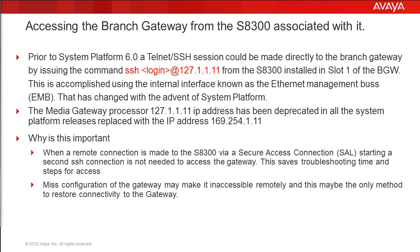They have been replaced now with 169.254.1.31 and .11 respectively. Why is this important? When the system is remotely accessed over a secure access link SAL connection, starting an SSH connection would not be necessary, troubleshooting time is reduced, and several extra steps are not needed in that process. Secondly, misconfiguration of the gateway address can make the gateway inaccessible, and this procedure may be the only way to restore connectivity.